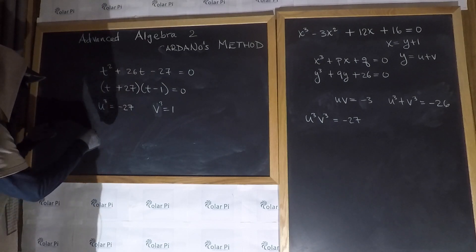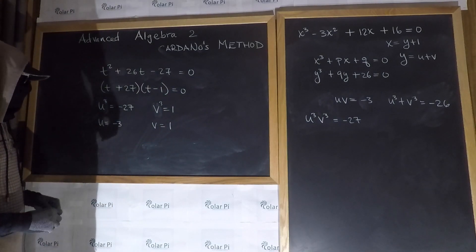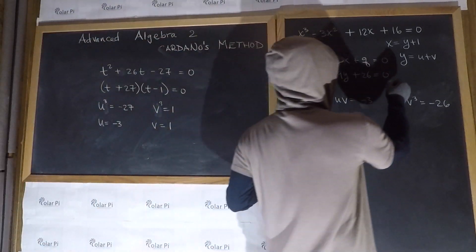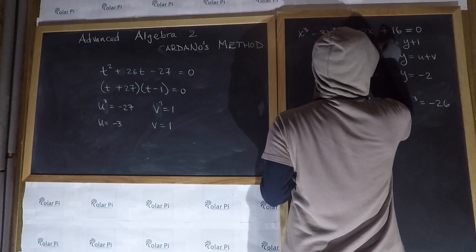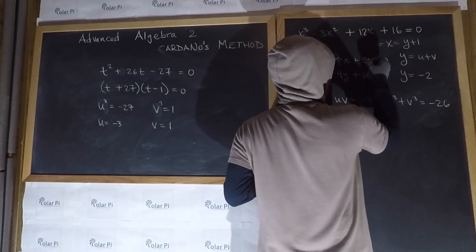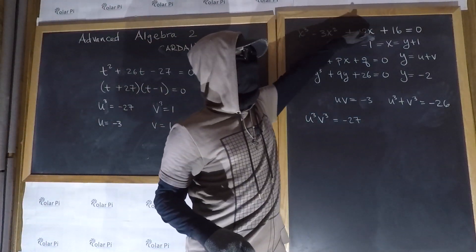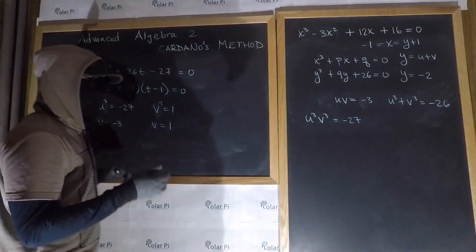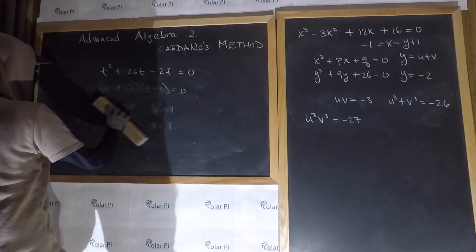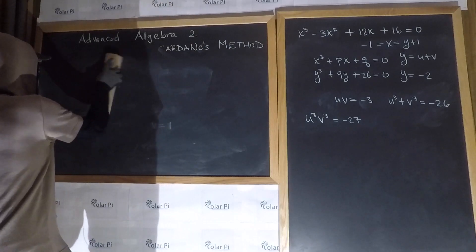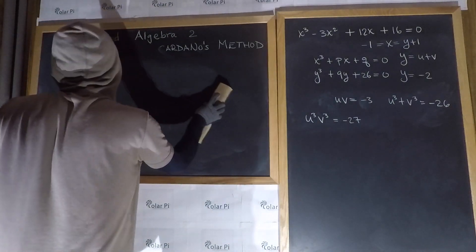That means u = -3 and v = 1. Then y = u + v = -3 + 1 = -2. So x = y + 1 = -2 + 1 = -1. So we just found one of the x's that solves this cubic. Since we already have a zero, we can do synthetic division and factor our cubic into a quadratic times a linear.